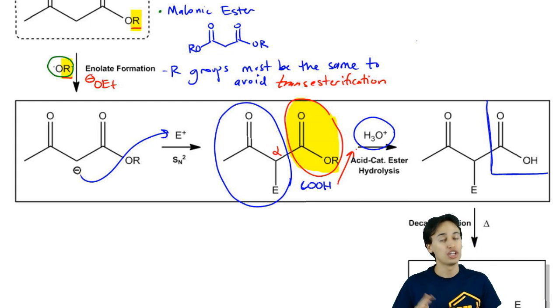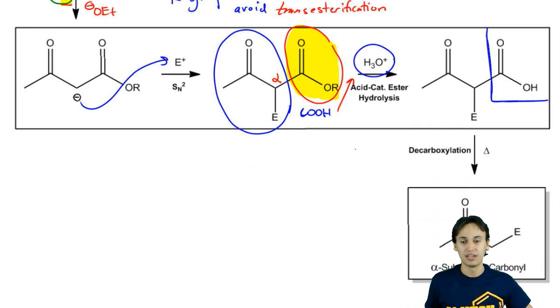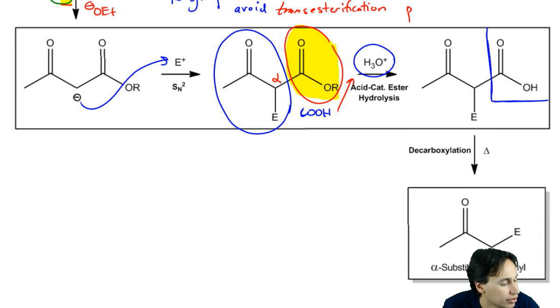This hydrolysis, you don't need to draw the whole mechanism here. You just need to know that you're hydrolyzing an ester to a carboxylic acid. What's important about that? Once you do that, then you're going to have what we call a beta-carbonyl carboxylic acid.